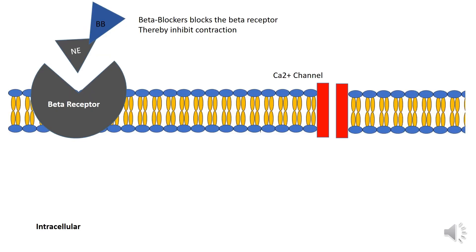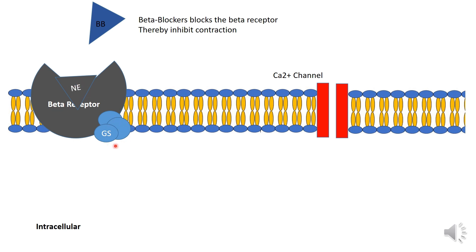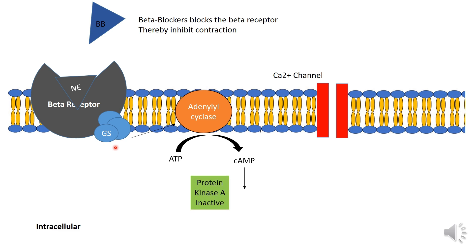Now we will see the mechanism of action of beta blockers. Normally, norepinephrine binds with a beta receptor and leads to the activation of a G protein. That means the beta receptor is a type of G protein-coupled receptor. When norepinephrine binds with the beta receptor, it activates the G protein, which then activates adenylyl cyclase. This adenylyl cyclase then converts ATP to cyclic AMP.